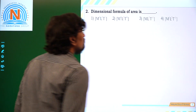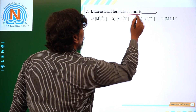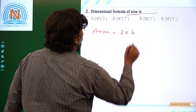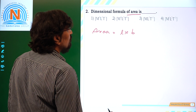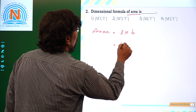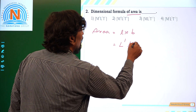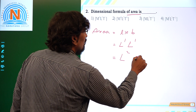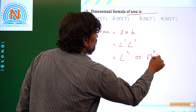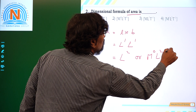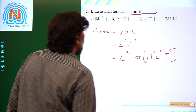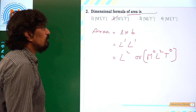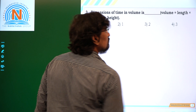Next question: the dimensional formula of area. Area is equal to length into breadth, which gives the dimension L power 1 for length and L power 1 for breadth. So the dimensional formula of area is L power 2, or M power 0, L power 2, T power 0.